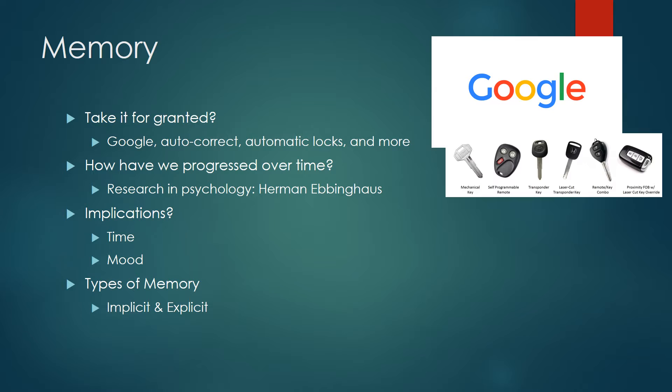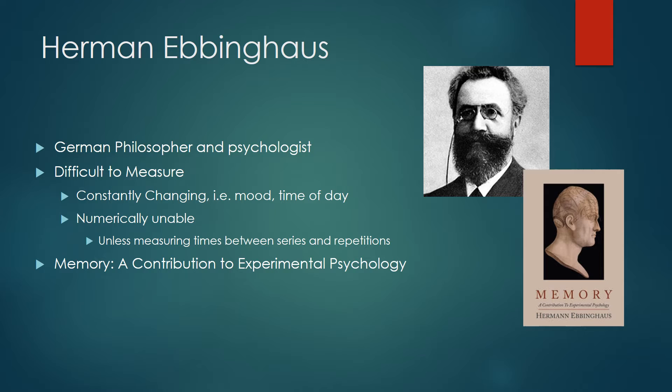Hermann Ebbinghaus was a German philosopher and psychologist. In this capacity, he realized that there wasn't any regard to how to study memory. If other processes could be studied, why not this one? However, he realized the implications — it was difficult to measure. Memory can be constantly changing, especially according to certain moods and even time of day.